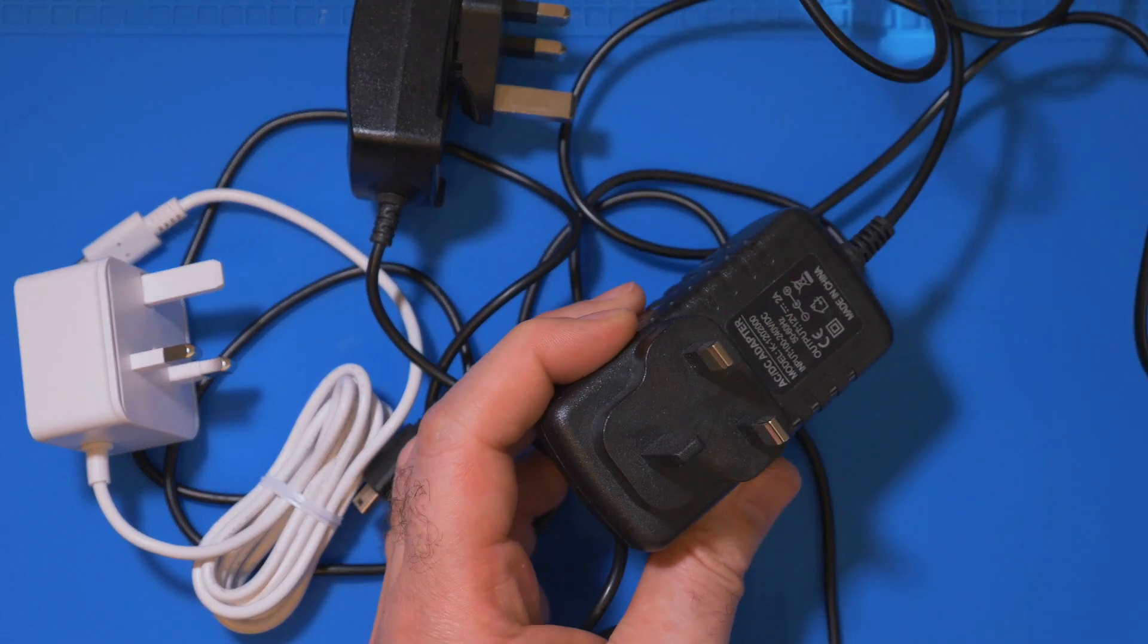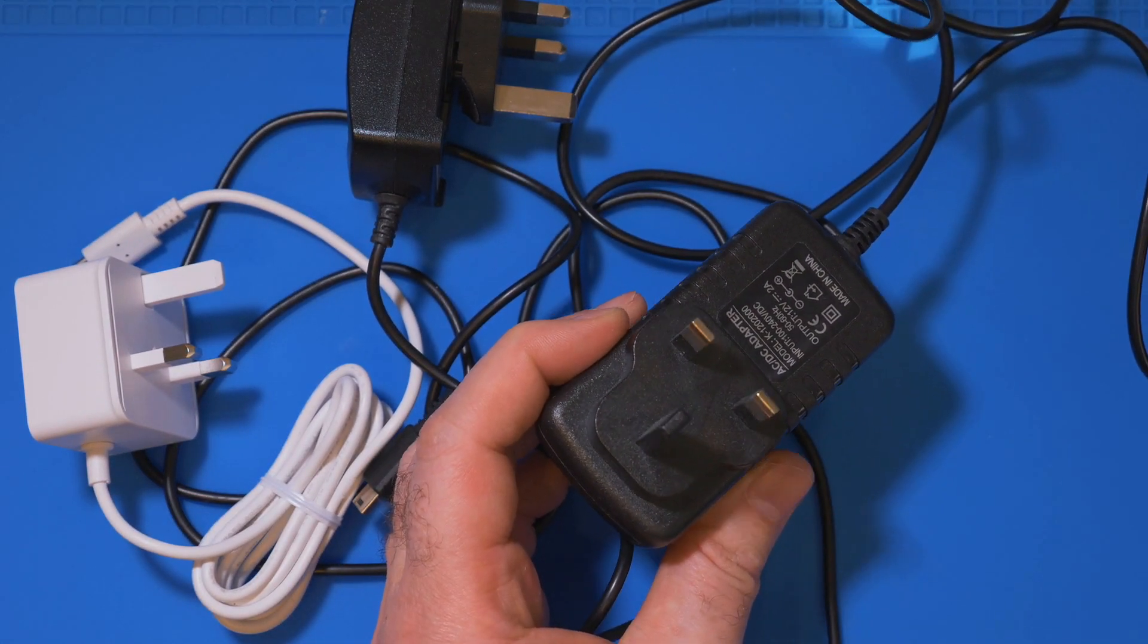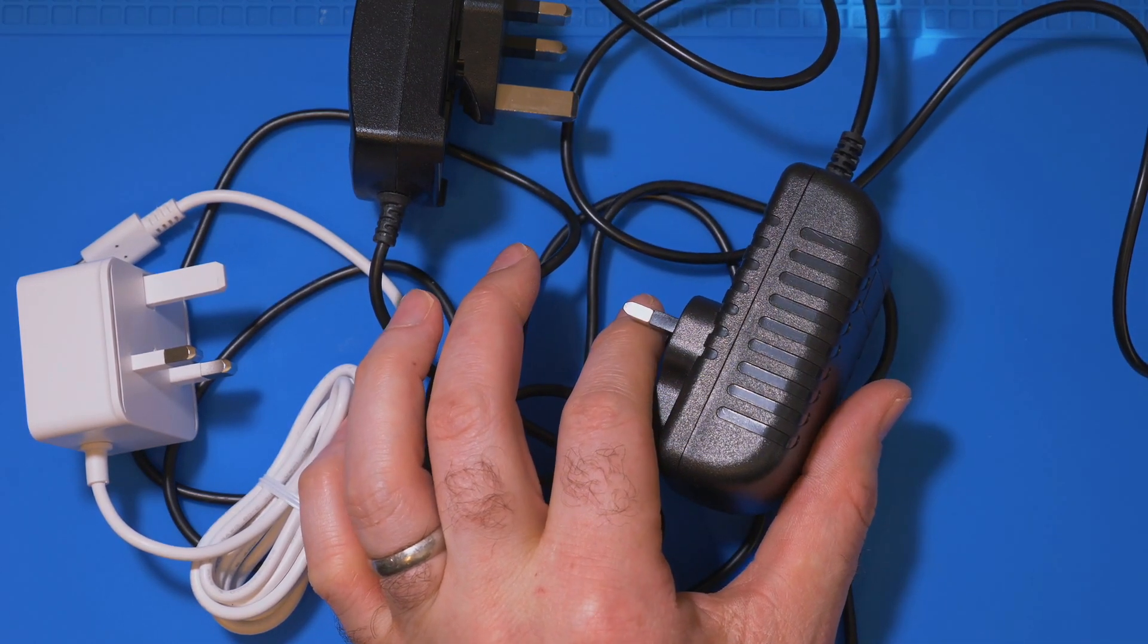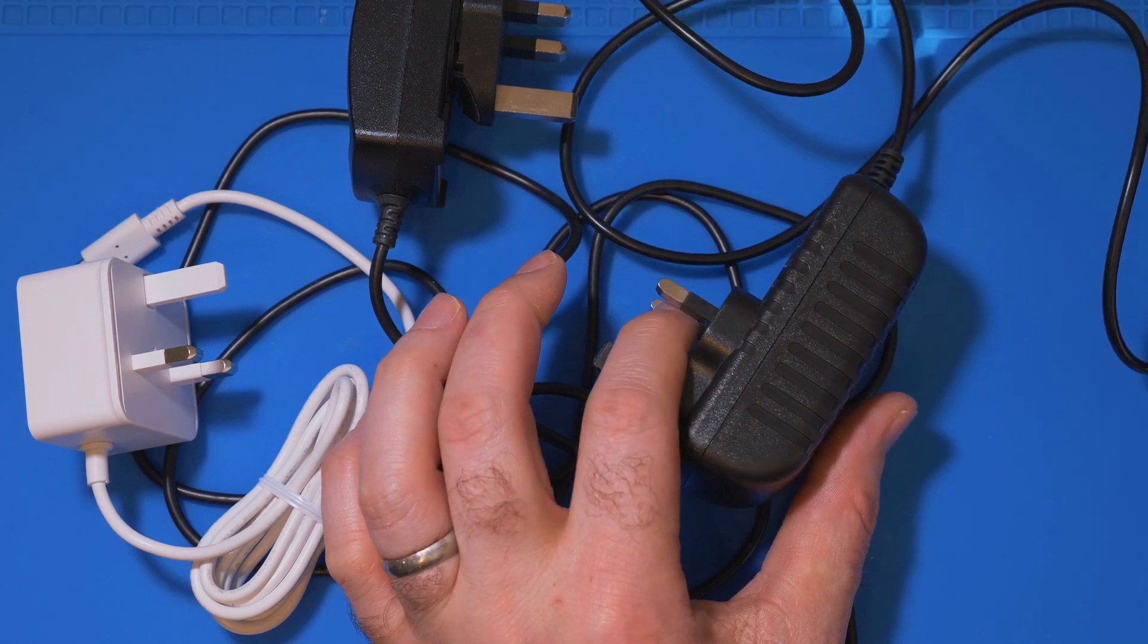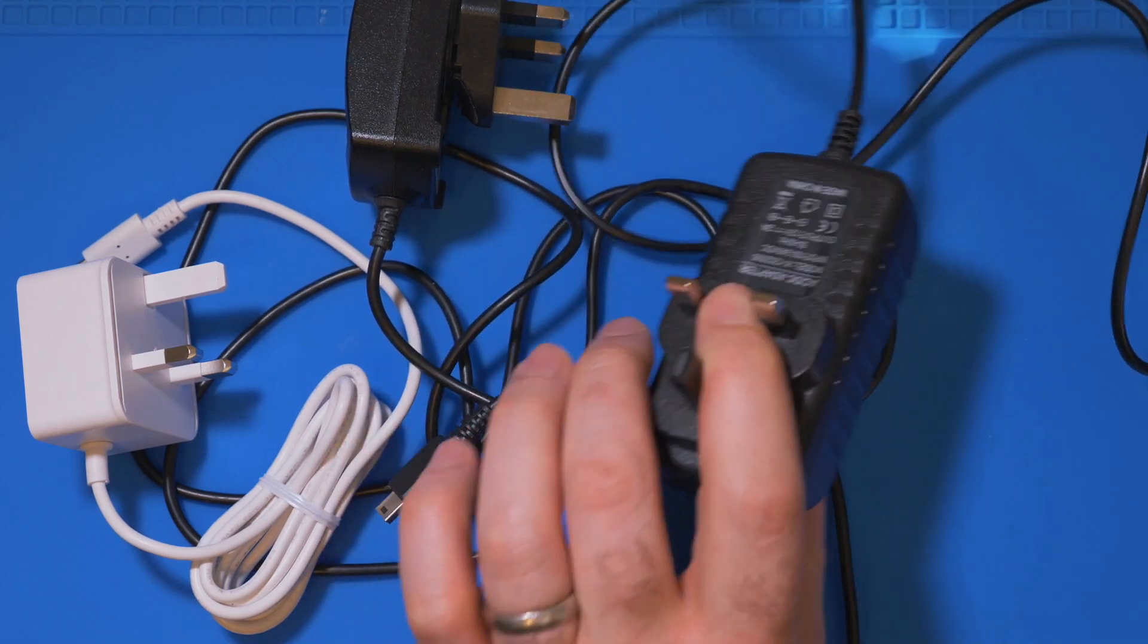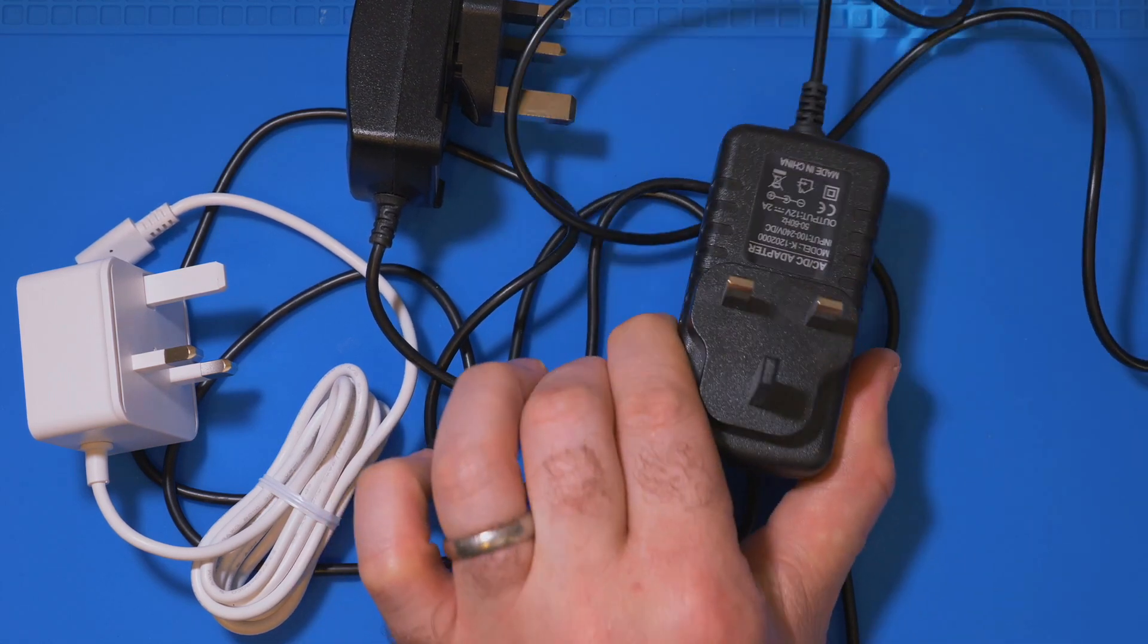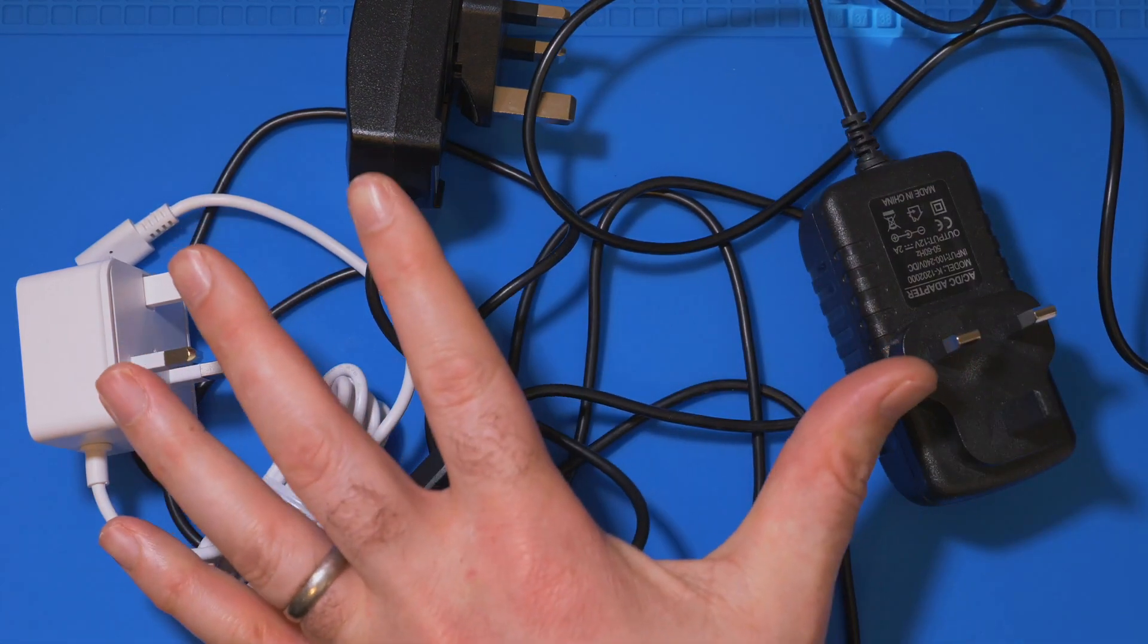Over here, this is a 12-volt power brick, and it puts out 2 amps at 12 volts. I would not recommend plugging this directly into any of your projects. Well, within reason. There's a couple of projects which this would work out perfectly fine, but I'll show you what we're going to do with this in just a little while.